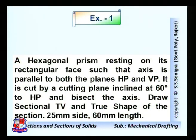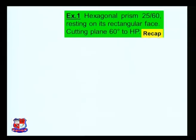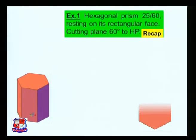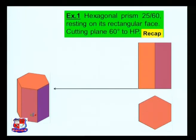This problem was solved last time up to half the steps and the last steps are retained. Today we will discuss the remaining steps of this problem. The short data is: hexagonal prism 25 by 60, resting on its rectangular face, cutting plane at 60 degrees to HP. The hexagonal solid is shown.